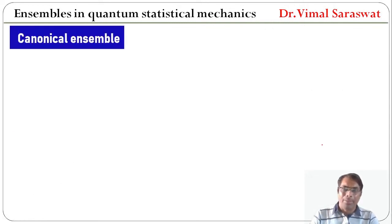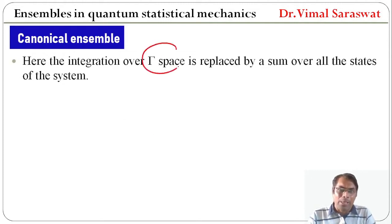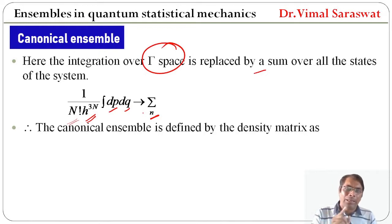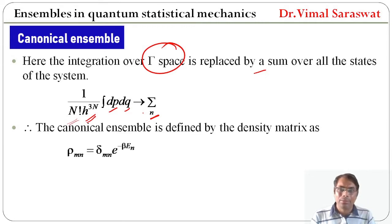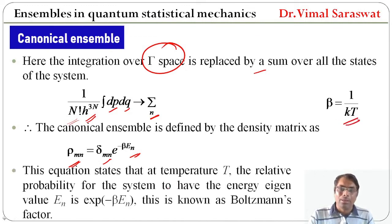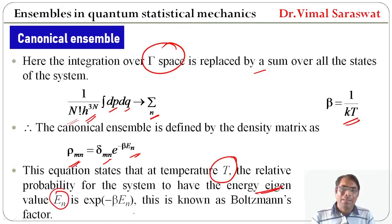Now, canonical ensemble. Here the integration over gamma space is replaced by a sum over all the states of the system. So 1 over N! times h^(3N) times the integral dp dq becomes sigma_n. The canonical ensemble is defined by the density matrix as rho_mn equal to delta_mn times e^(minus beta E_n), where beta equals 1 over kT. This equation states that at temperature T, the relative probability for the system to have energy eigenvalue E_n is e^(minus beta E_n). This is known as the Boltzmann factor.